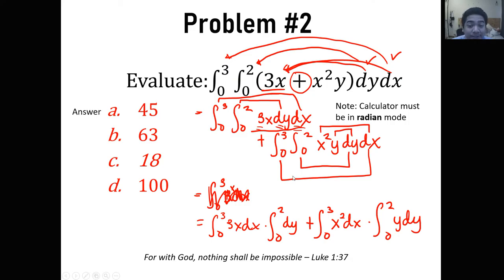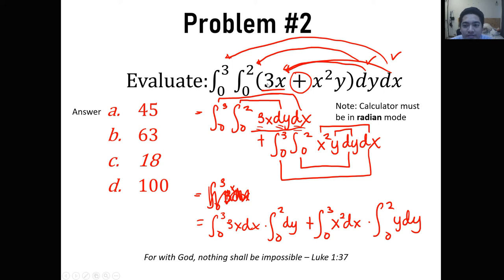That's how you solve it. By the order of the variables, you can match each with a certain integral. Do not interchange them — the innermost variable corresponds to the innermost integral, and the outermost matches with the outermost integral.